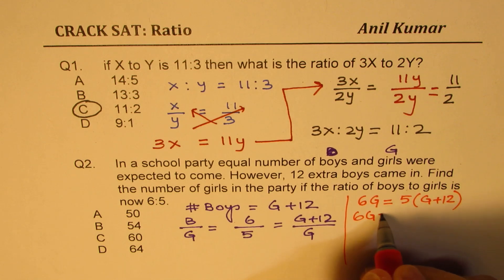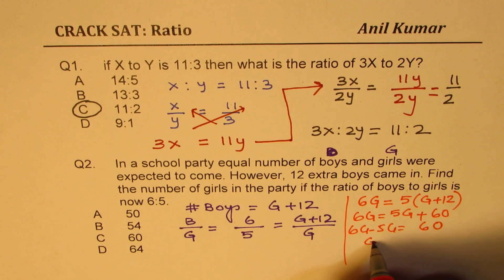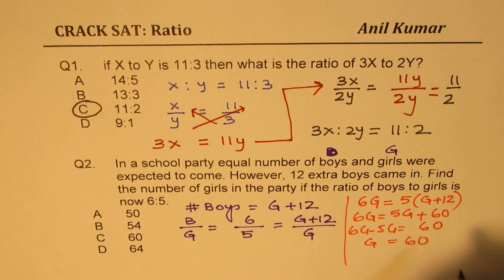So we get 6G equals to 5G plus 60. Taking away 5 from 6, we get girls equals to 60, right? So we get girls equals to 60. So the option C is the right option.